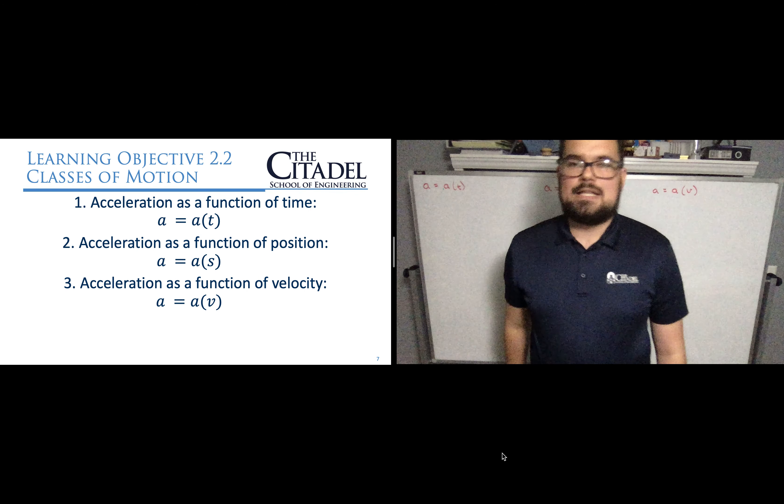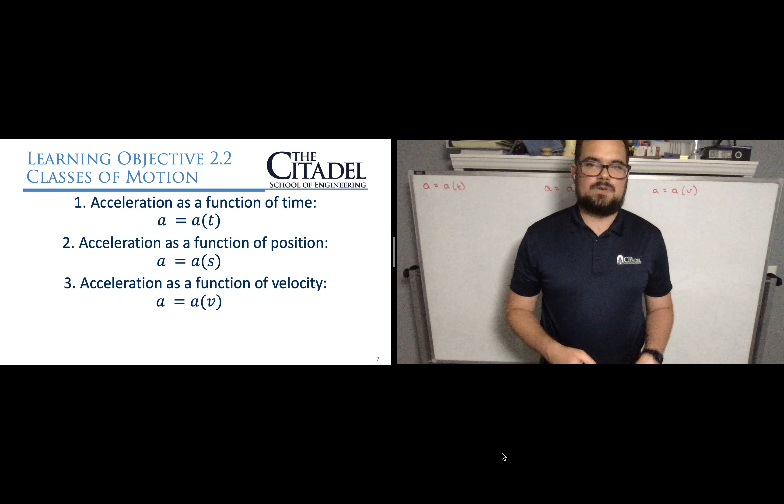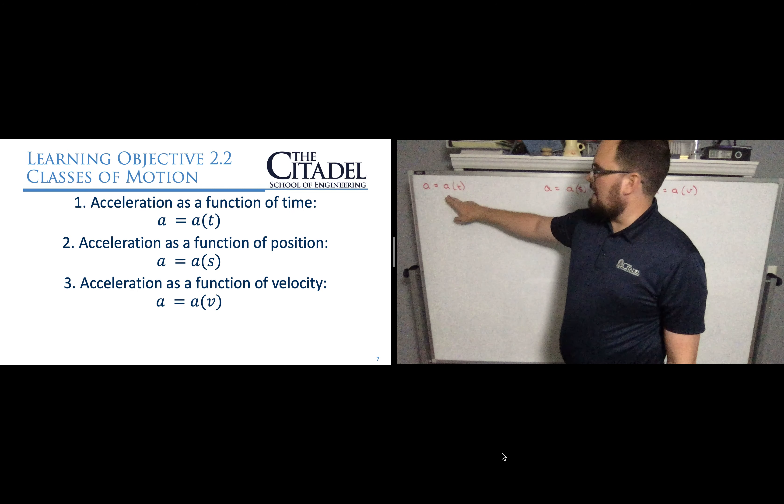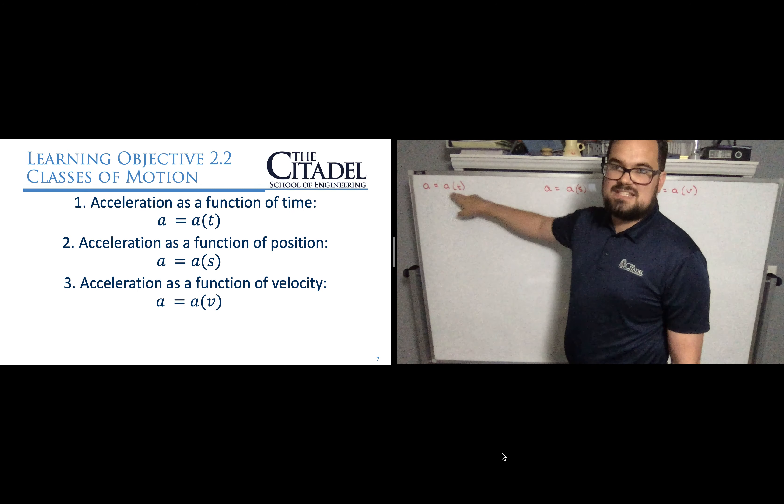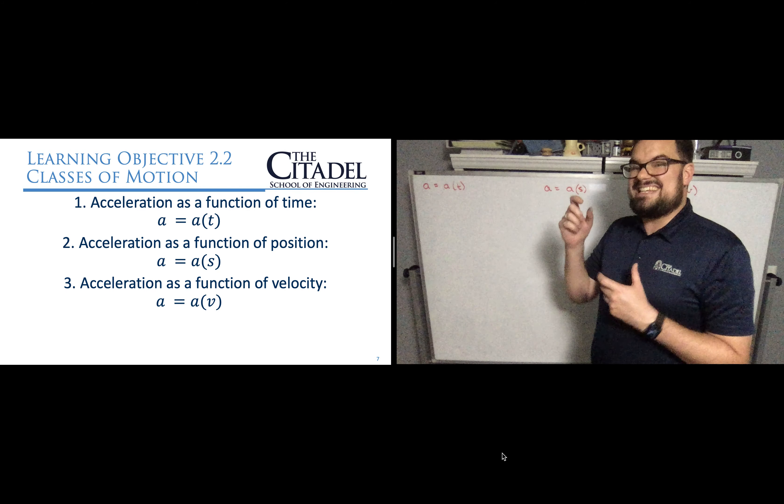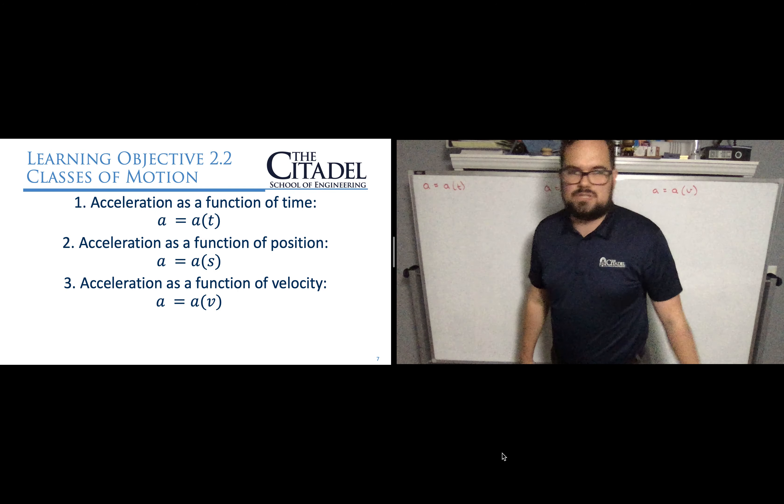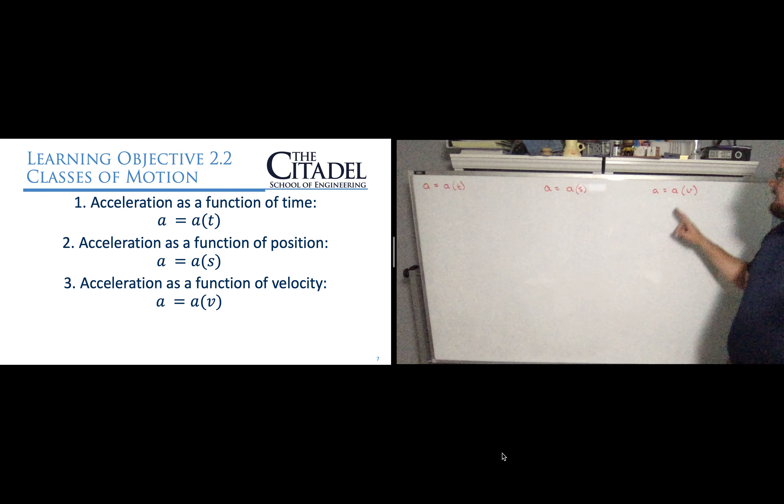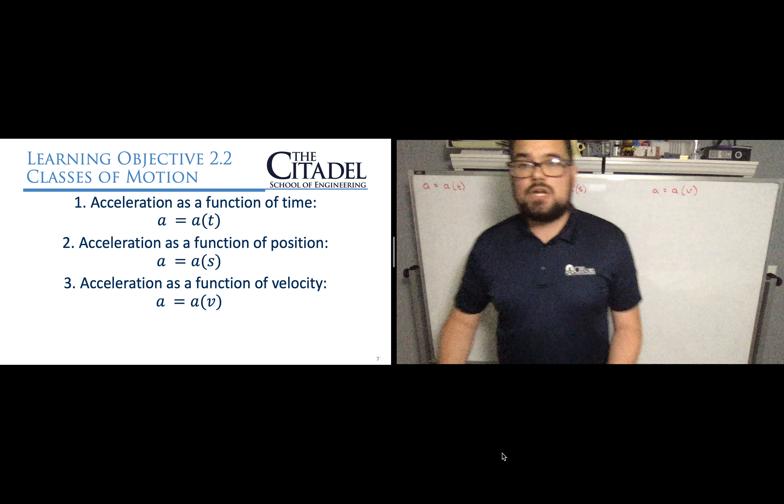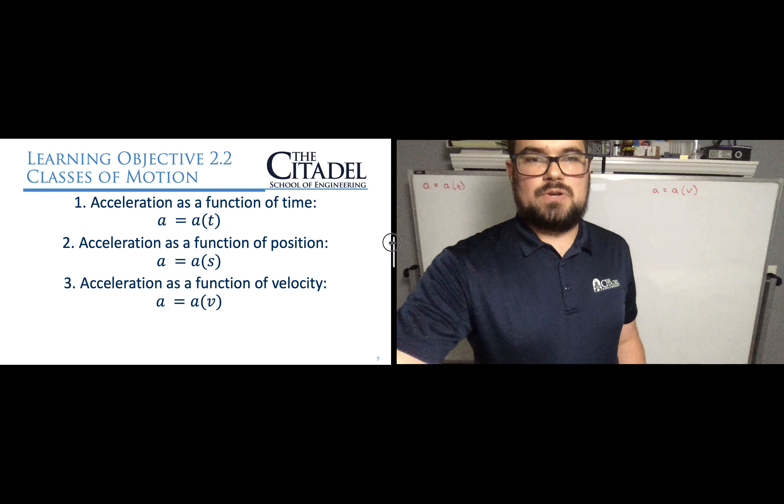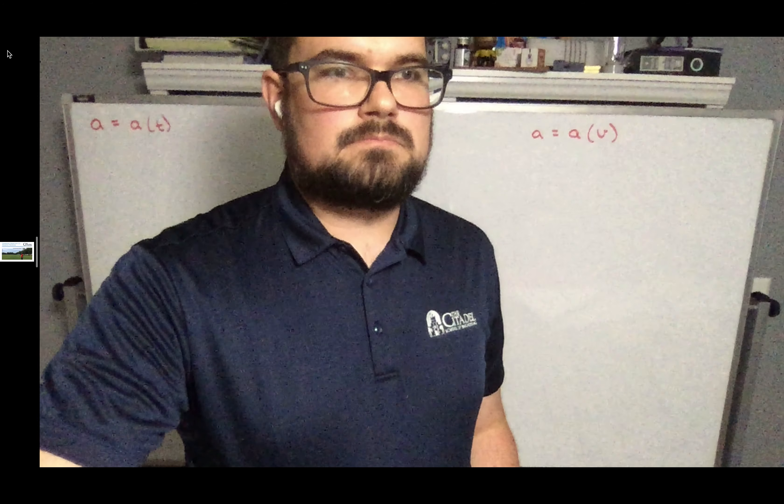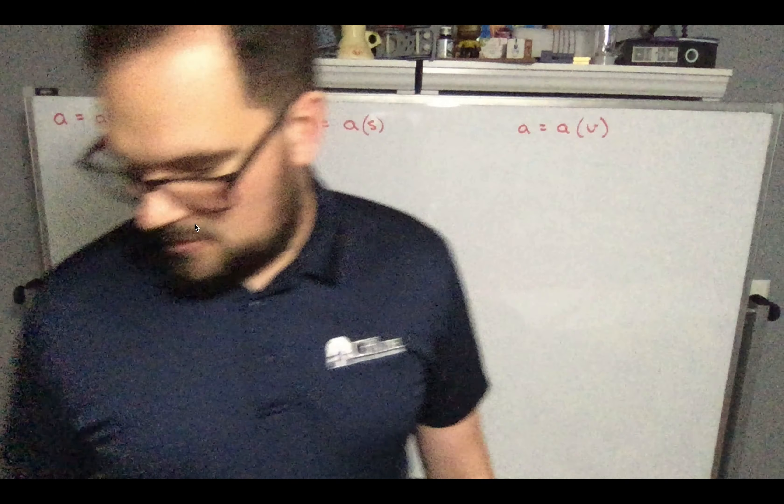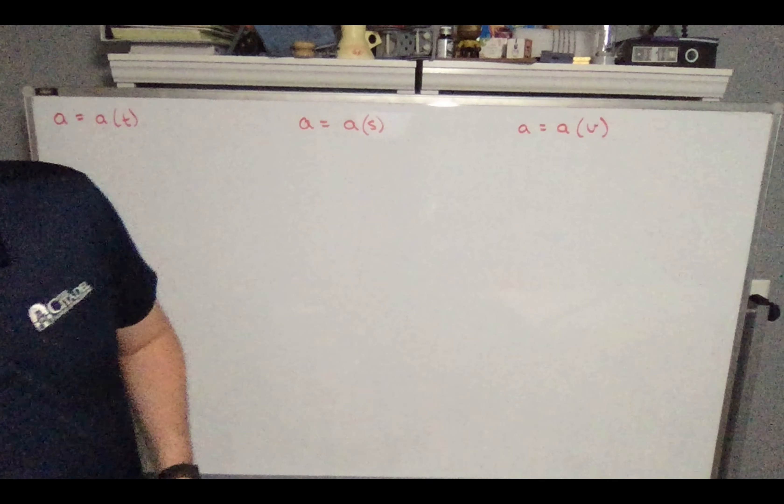It turns out that the way we can think about acceleration is sometimes acceleration is given to us as a function of time. You can see here, this notation is not a times t. This is like function, right? So acceleration as a function of time. So whatever this is, we're going to expect to see numbers with units and t's showing up in that equation. This would be contrasted with acceleration as a function of position s, or acceleration as a function of velocity. And so each one of those cases, we can have some equations handy. I'm going to blow the screen up full size so that we can see this well.